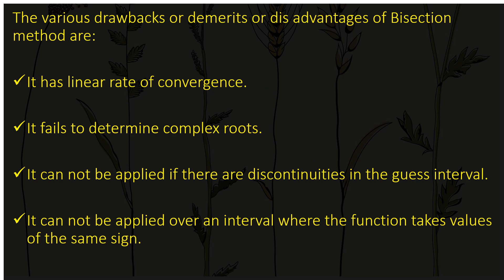Other disadvantages of the bisection method are: it has a linear rate of convergence; it fails to determine complex roots; it cannot be applied if there is discontinuity in the guess intervals; and it cannot be applied over an interval where the function takes values of the same sign. The fundamental property requires that for values A and B, F(A) and F(B) must have opposite signs — if they have the same sign, the root cannot be found.